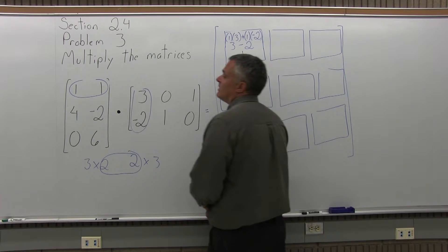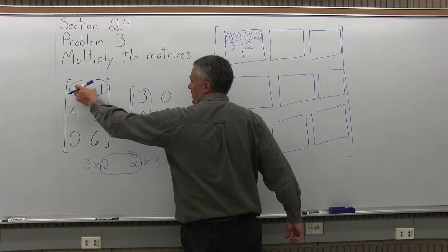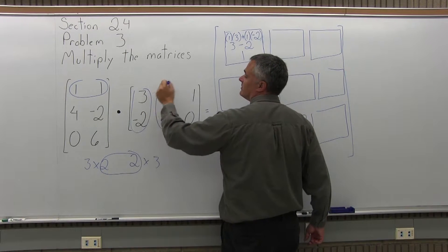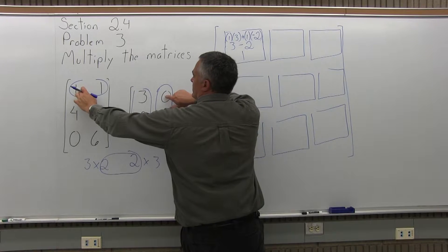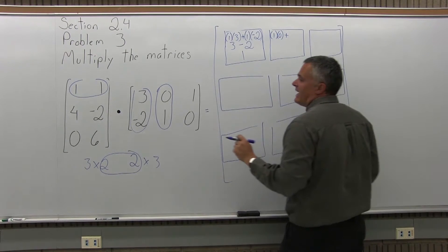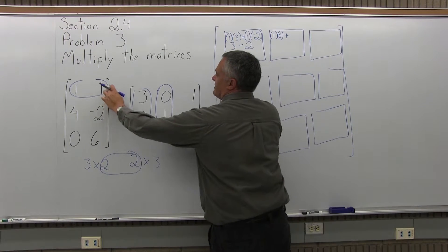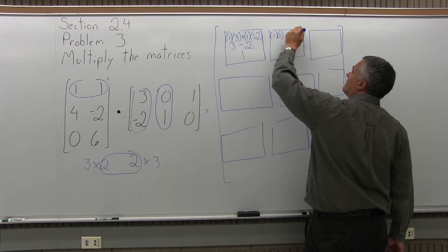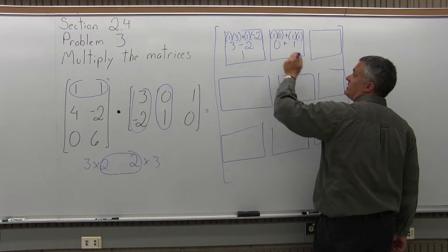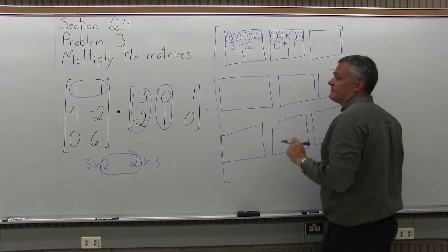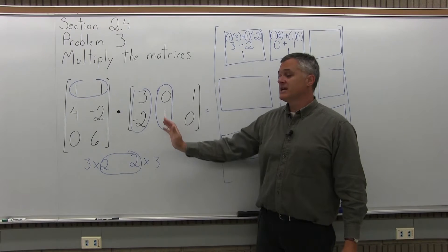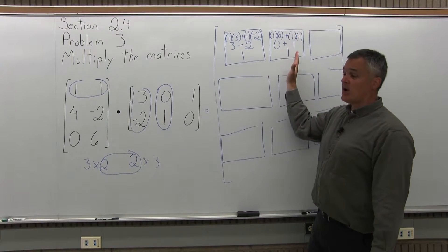Next, I'm going to multiply the top row, 1, 1, from the first matrix times the second column, 0, 1, from the second matrix. First times first is 1 times 0, and second times second is 1 times 1. So 1 times 0 is 0, and 1 times 1 is 1. When you add 0 and 1, you get 1. We multiplied the top row of the first matrix times the middle column of the second matrix, and the result goes in the top row and middle column.